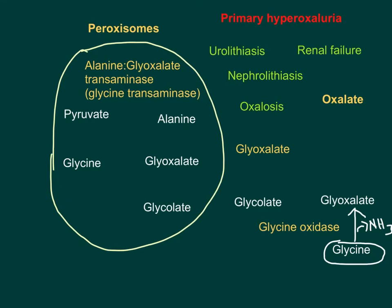Glyoxalate is then converted to glycolate, and this is done by the enzyme glycolate reductase. These reactions — glycine converted to glyoxalate by glycine oxidase, and glyoxalate converted to glycolate by glycolate reductase — all occur in the cytoplasm.